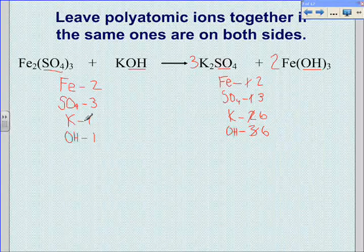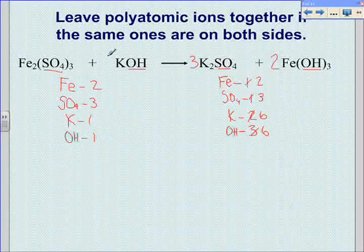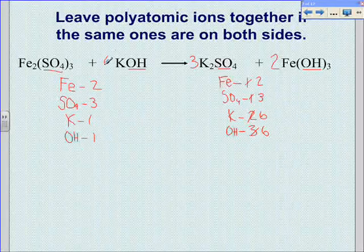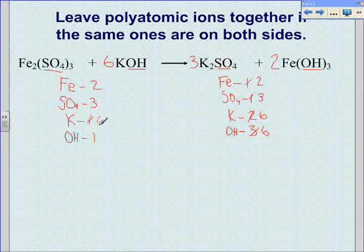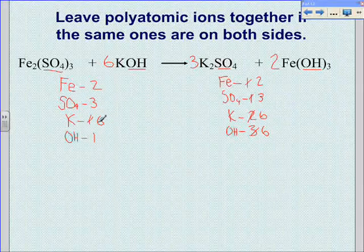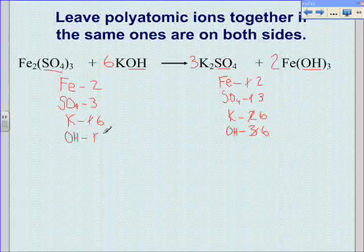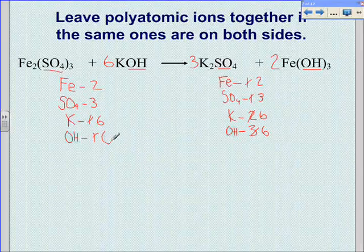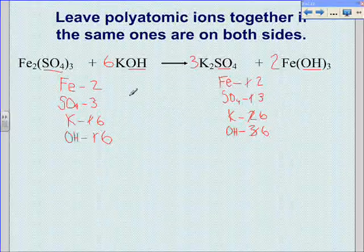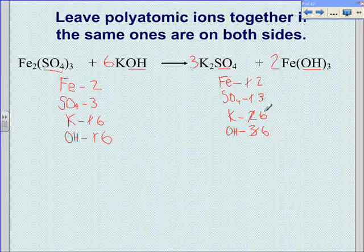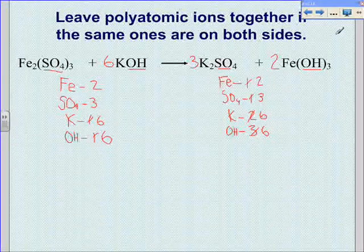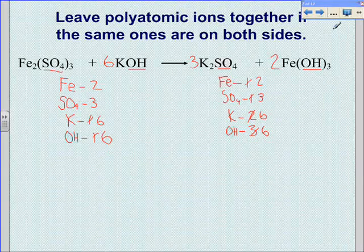We need to have six potassiums and six hydroxides on the left side, so we put a coefficient of six before this compound. We change our numbers, and now we see that our numbers match: 2, 3, 6, 6 on both sides. This equation is balanced.